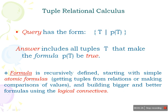In tuple relational calculus, the basic syntax is: T such that p(t), where t is a tuple variable and p(t) is a formula. If p(t) evaluates to true, then the record or tuple will be stored in the result. Whatever tuples are evaluated to true, those results will be stored in the tuple variable capital T.